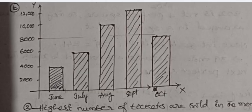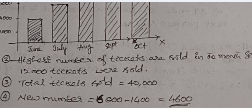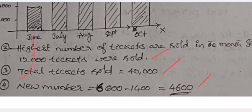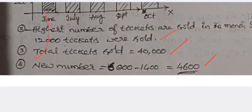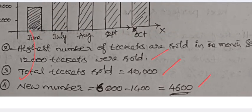Section D solution — movie tickets: June: 4,000; July: 6,000; August: 10,000; September: 12,000; October: 8,000. The highest number of tickets were sold in September — 12,000. Total tickets sold: 40,000. If 1,400 fewer tickets are sold in July, the new number is 6,000 minus 1,400 equals 4,600. This completes the full question paper solution.